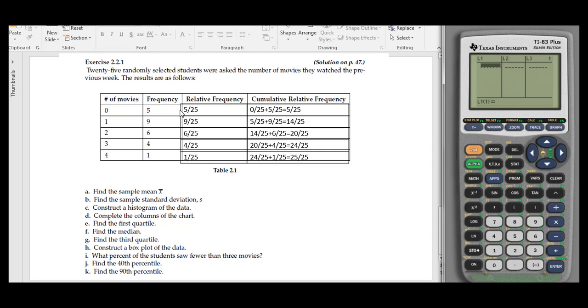In List 1, I'm going to put the number of movies: 0, 1, 2, 3, and 4. In List 2, I'm going to put the frequencies: 5, 9, 6, 4, and 1. So I have my frequency information here.